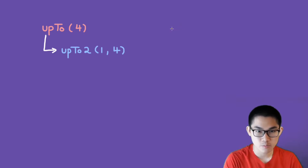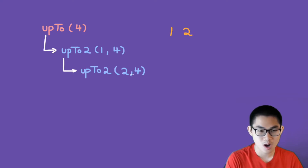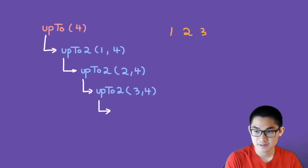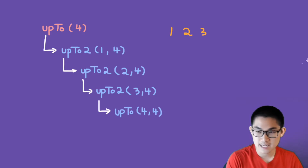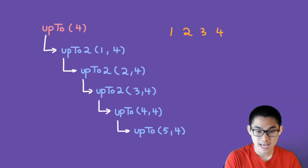This function will print out number 1, and then it's going to recurse upon itself, calling itself with the current number incremented to 2. The end value of 4 stays the same. It prints 2, then recurses to 3 and 4. Finally, it recurses with 5 and 4, and at this point we tell the computer to stop because 5 is larger than 4. The final answer printed is 1, 2, 3, and 4.